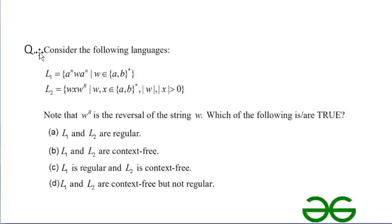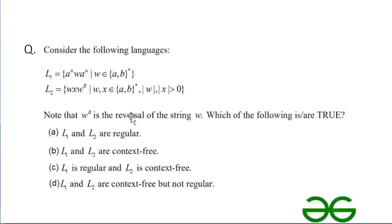Here is our first question. Consider the following languages L1 and L2, where L1 equals a^n w a^n where w belongs to {a,b}* and L2 equals w x w^R where w, x belongs to {a,b}* and |w|, |x| is greater than 0. Note that n is greater than or equal to 0, and w^R is the reversal of the string w.